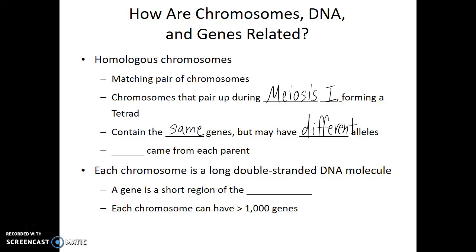These homologous chromosomes — one came from each parent, or in the case of self-fertilization, one came from each gamete. One chromosome arrives on the sperm, the other comes on the egg. Each chromosome itself is a long double-stranded DNA molecule, and a gene is just one short region of that chromosome. Each chromosome can have more than a thousand genes.